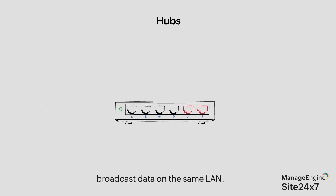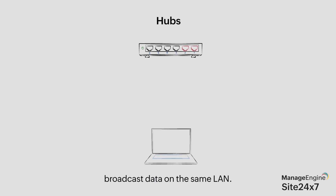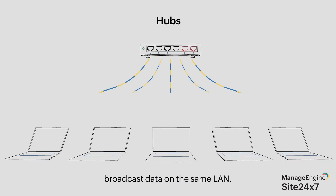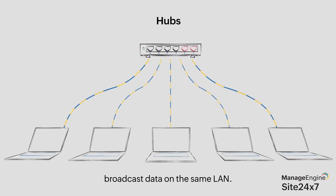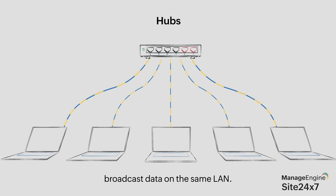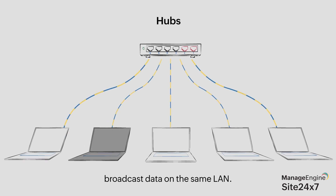Devices called hubs are multiport repeaters that broadcast data to all the devices on the same LAN. However, it consumes a lot of bandwidth as a hub transmits data to all the devices, irrespective of whether the device requires it.